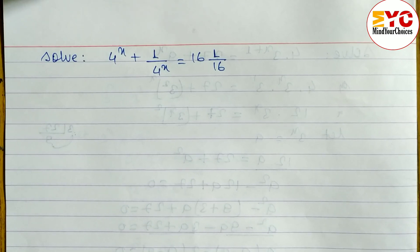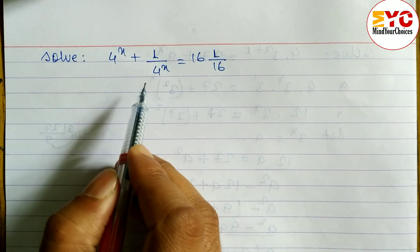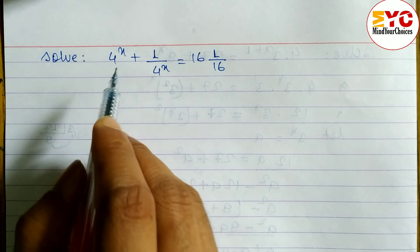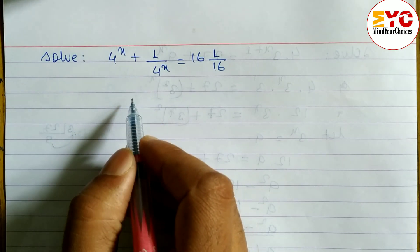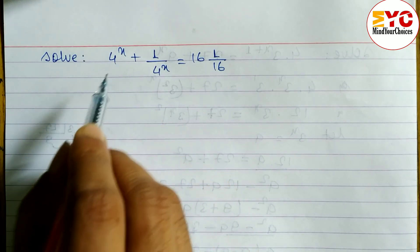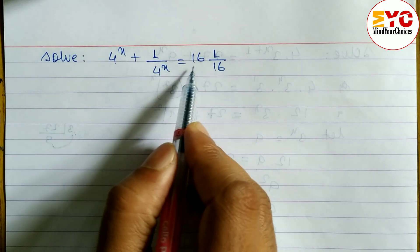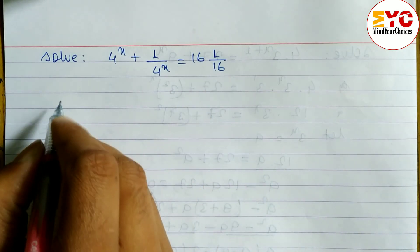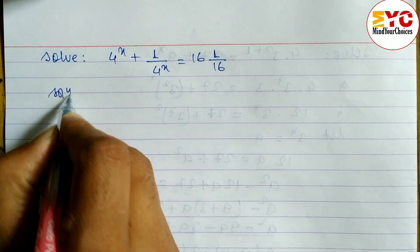This question is taken from SE modal questions and is very important for SE strengths. We have to solve — that means we have to find out the value of x. The equation is: 4^x + 1/4^x is equal to 16 + 1/16.